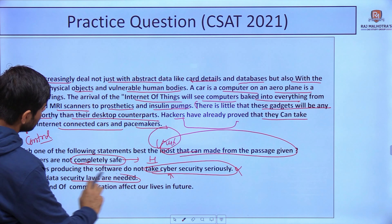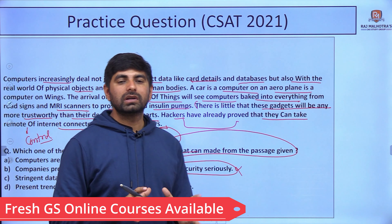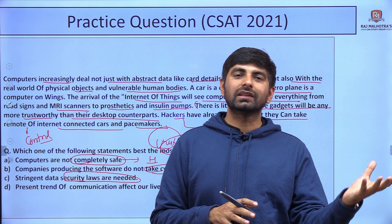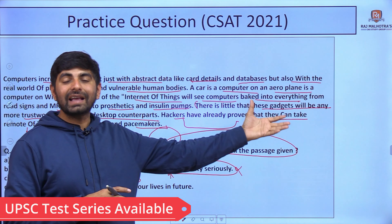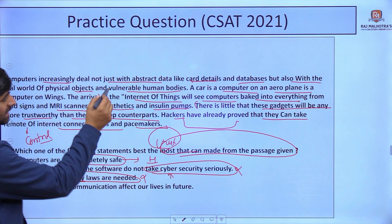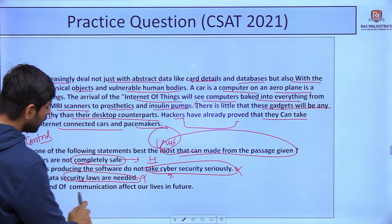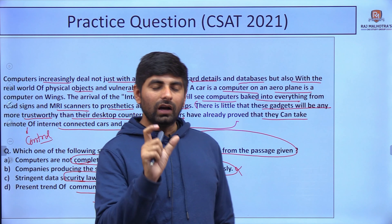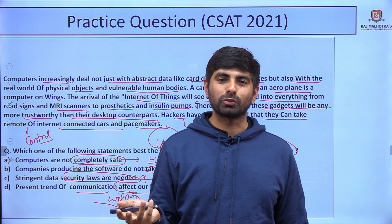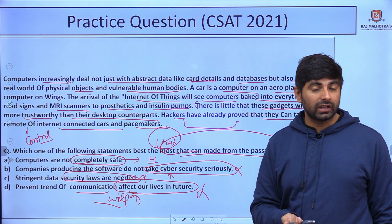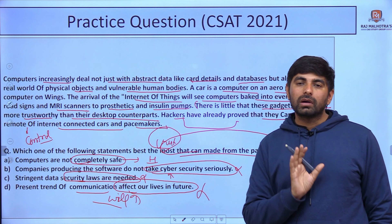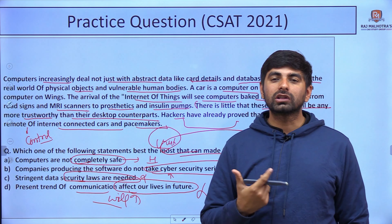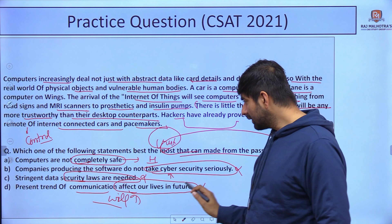Option C: stringent data security laws are needed. We might think this is possible, but hackers have already proved they can hack computers, so the passage doesn't focus on legal solutions — this is not focused on the passage's content. Option D: the present trend of communication will affect our lives in future. Yes, it will affect us, but this was not what was discussed in the passage — the author was not asking about future impact of communication trends. So Option D is not the suitable answer either.